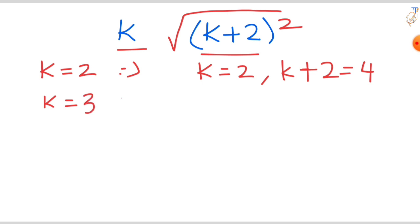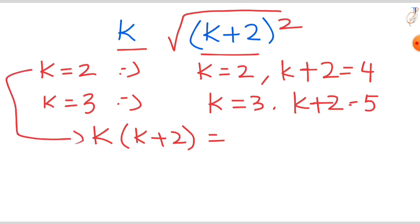If k equal to 3, then k plus 2 equal to 5. So if you take the factor's product, then you will get, when k equal to 3, you will get 3 times 5. So clearly we can say that k and k plus 2 are our factors.